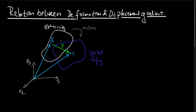Let us recall the setup in continuum mechanics, where we have a body which undergoes a motion, and we take two snapshots of it: one in a reference configuration, usually in the unloaded state, and one in a spatial configuration, when it is loaded. Then we can track some continuum particles — think of tracking some atoms — and we can assign them a position in the reference configuration and a changed position after the motion in the spatial configuration. We can assign positional vectors to them, and the vectorial difference of the two is the displacement.